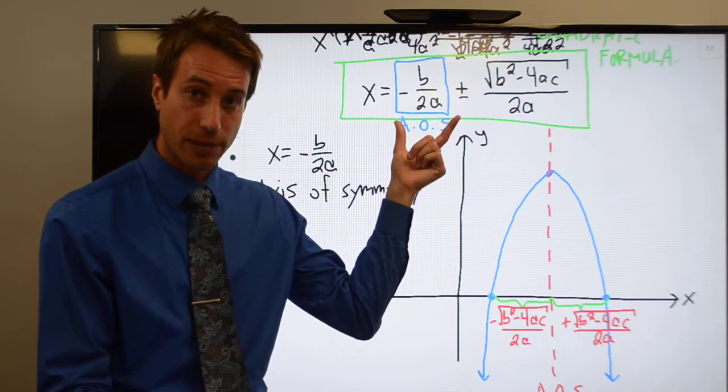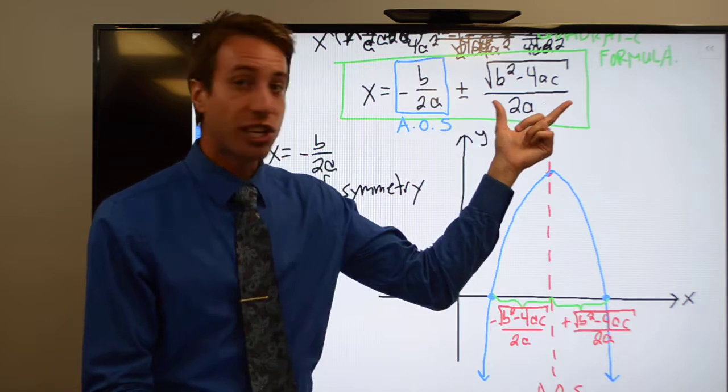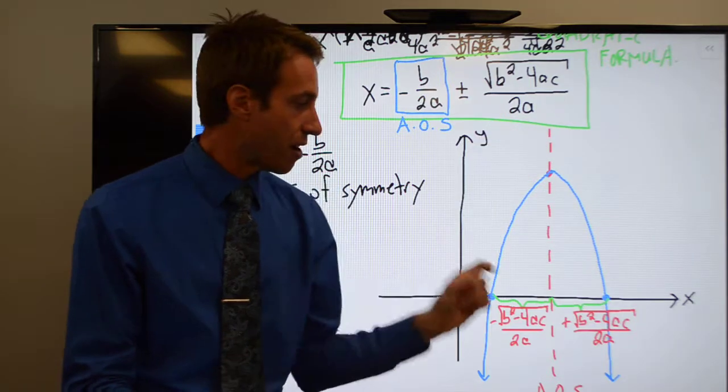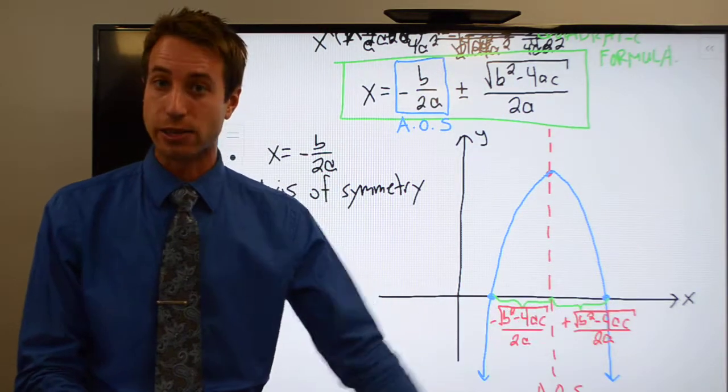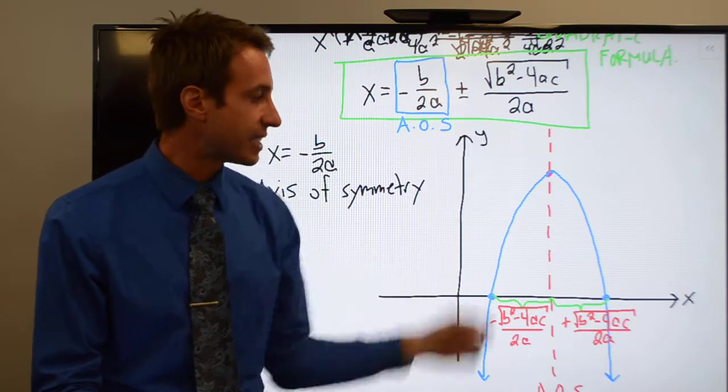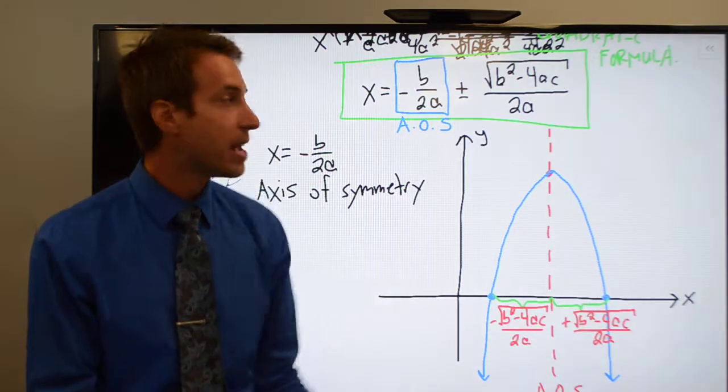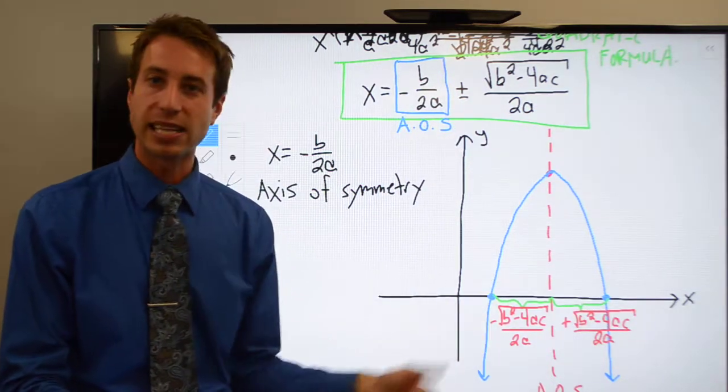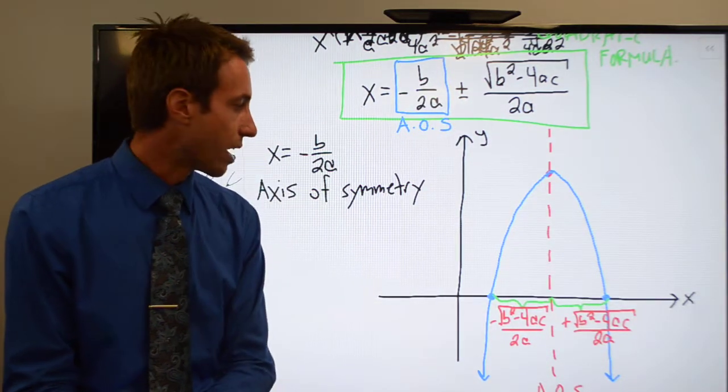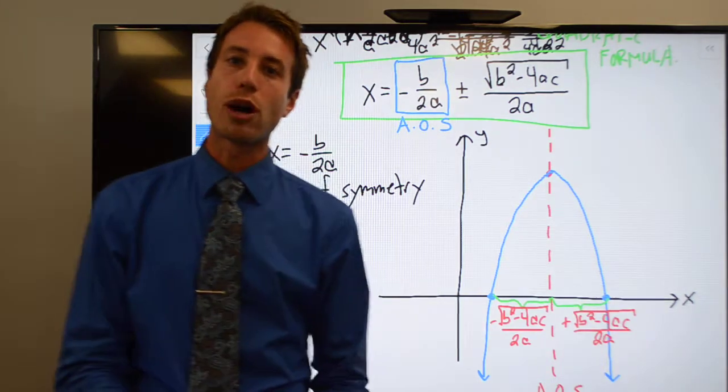And it's because this one much more accurately describes what the quadratic formula is doing. It is finding the axis of symmetry and then calculating the distance from the axis of symmetry to the x-intercepts. Take the axis of symmetry and add that distance, you get the first one over here. Take that axis of symmetry and subtract the distance and you get your second x-intercept on the other side. That's the way the quadratic formula works.